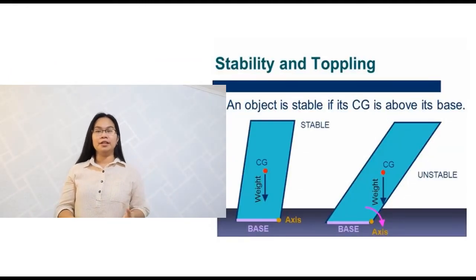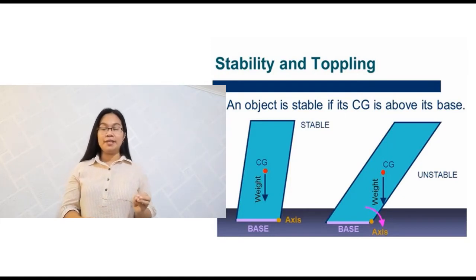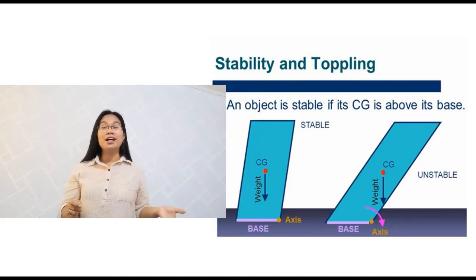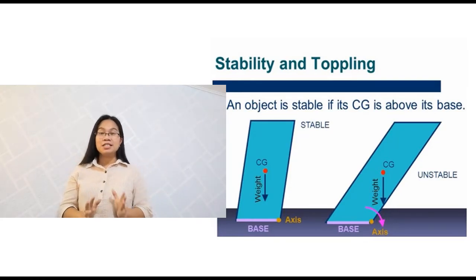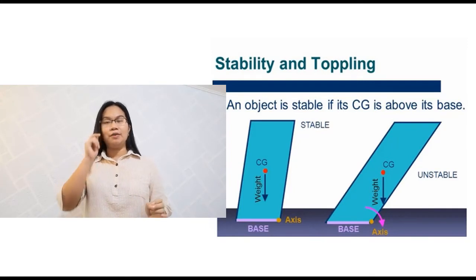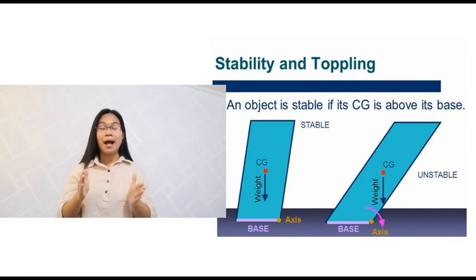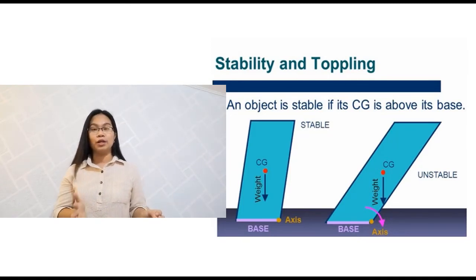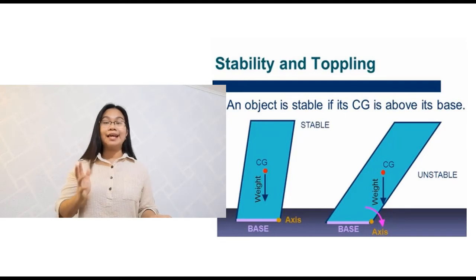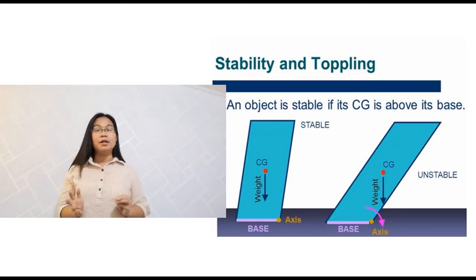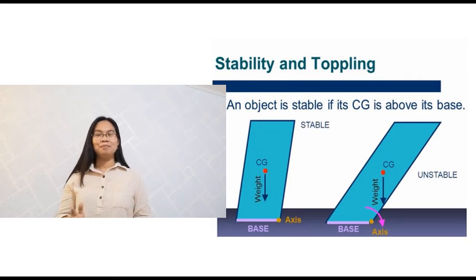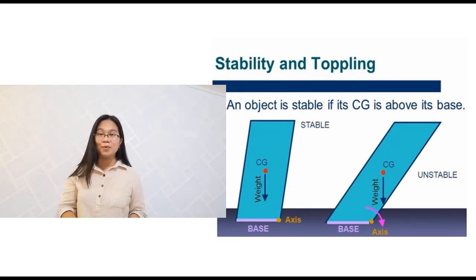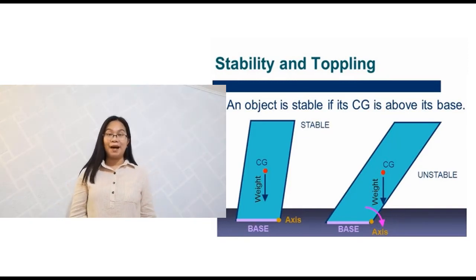Now let's talk about stability and toppling over. In the first illustration, the center of gravity, when you draw a straight line, still lies within the area of support, so it will not topple over. The Leaning Tower of Pisa leans but does not fall because its center of gravity still lies within the area of support. In the second illustration, the center of gravity is away from the pivot point and no longer lies within the area of support, so the object may topple over. Always ensure your center of gravity is supported to keep your balance.